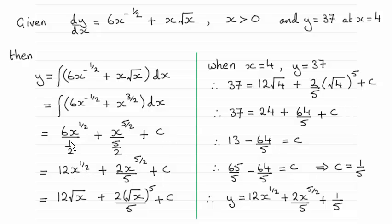So in order to get this I've times top and bottom here by 2, that gives me 12x to the power half over 1, just 12x to the power half, and here if you multiply top and bottom by 2 you get 2x to the power 5 over 2, all over 5.